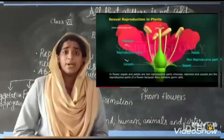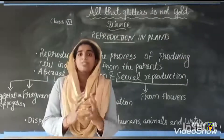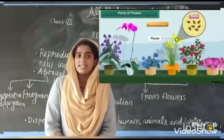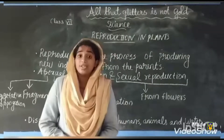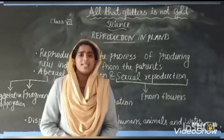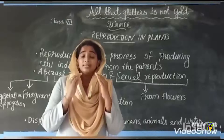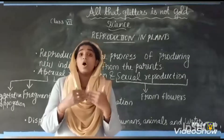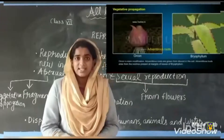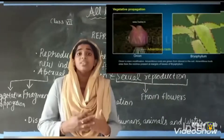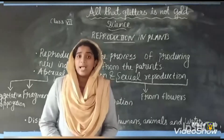What is sexual reproduction? Sexual reproduction means new plants are obtained from seeds. That is called sexual reproduction. What is asexual reproduction? Asexual reproduction means new plants are obtained without the production of seeds. That is called asexual reproduction.